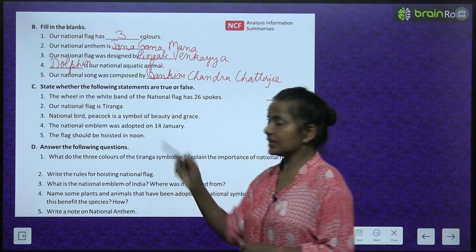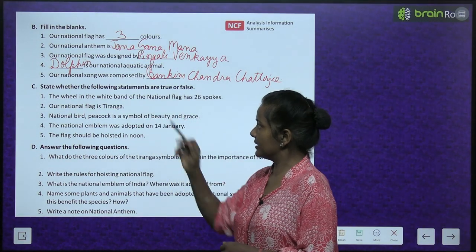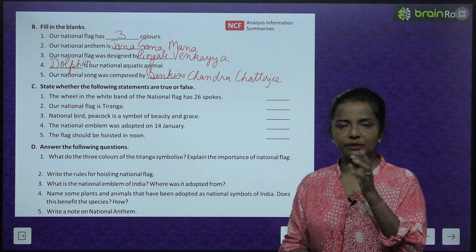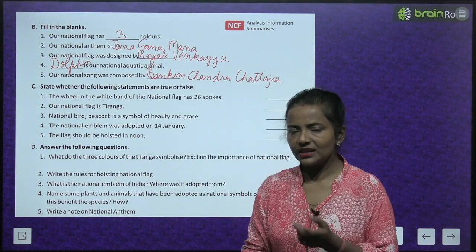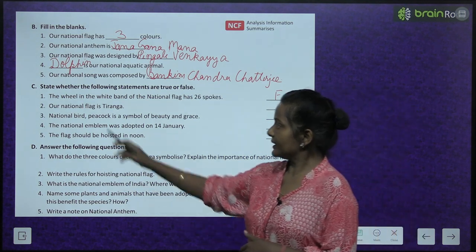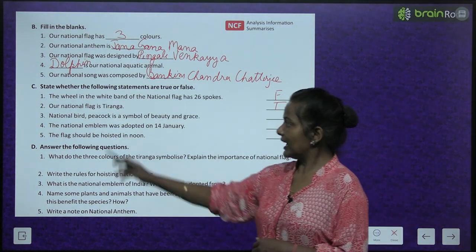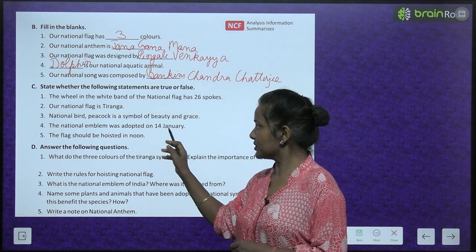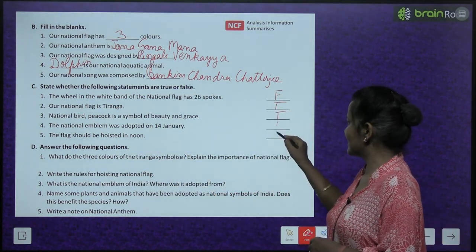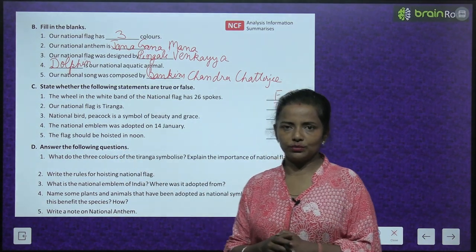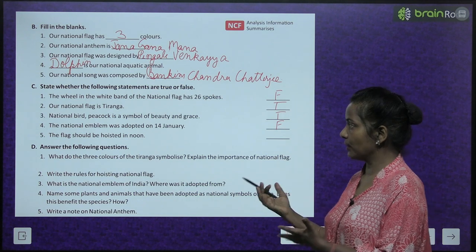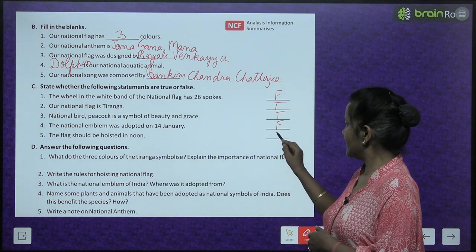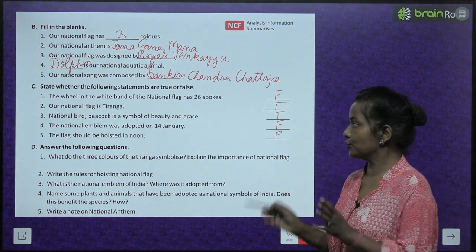True or false: The wheel in the white band of the national flag has 26 spokes — False, it has 24 spokes. Our national flag is Tiranga — True. National bird peacock is a symbol of beauty and grace — True. The national emblem was adopted on 14th January — False. The flag should be hoisted at noon — False, it can be hoisted any time between sunrise and sunset.